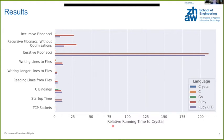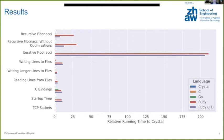The measurements here are always a relative running time to Crystal, meaning Crystal always has a value of one. A value of two would indicate that it takes twice as long as Crystal. In this first chart, we'll focus on Ruby in red and Ruby with just-in-time compilation in violet. We can clearly see that especially in the iterative Fibonacci implementation, they're quite a lot slower than all the other languages.